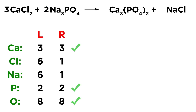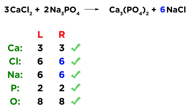We can take care of both chlorine and sodium at the same time, because on the right we have NaCl. We need to put a six here, since we have six sodiums and six chlorines on the left and only one of each on the right. Putting a six next to NaCl changes the number of sodium and chlorine atoms on the right to six, which balances both elements and completely balances the equation. Those are the coefficients in the balanced equation for this reaction.